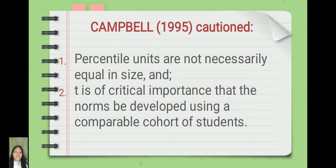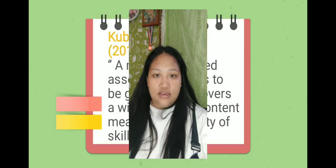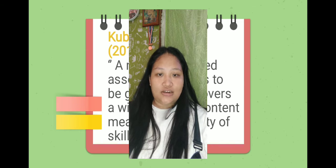Campbell in 1995 cautioned interpreters that percentile units are not necessarily equal in size, and it is of critical importance that the norms be developed using a comparable cohort of students.